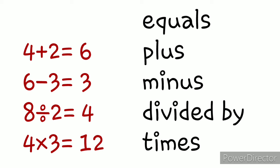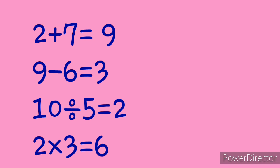First one — pause the video and you have to try first, and then play the video and check whether you have read that correctly or not. First one: 2 plus 7 equals 9. 9 minus 6 equals 3. 10 divided by 5 equals 2. 2 times 3 equals 6.